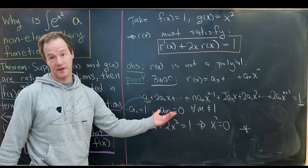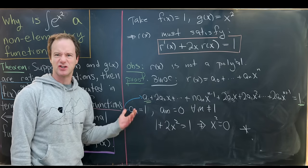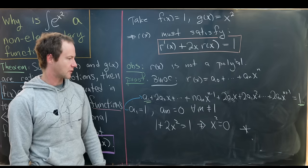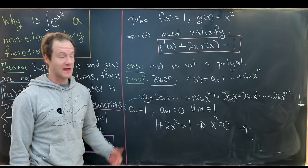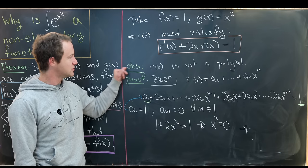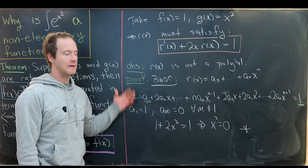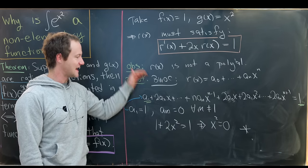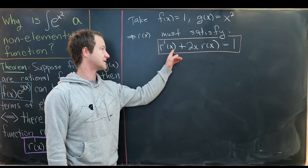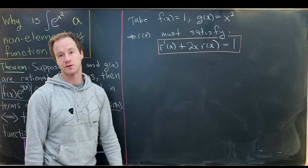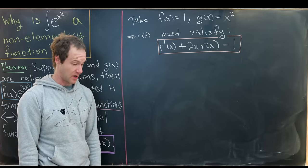But substituting back, we're left with 1 plus 2 times 1 times x squared equals 1, which means x squared equals 0. This must hold for all x, which is clearly false — x equals 0 is not a universal solution since this is a differential equation identity. Therefore r(x) is not a polynomial.